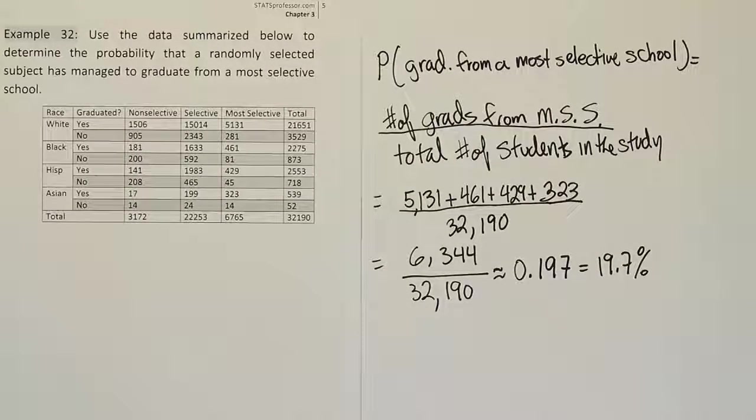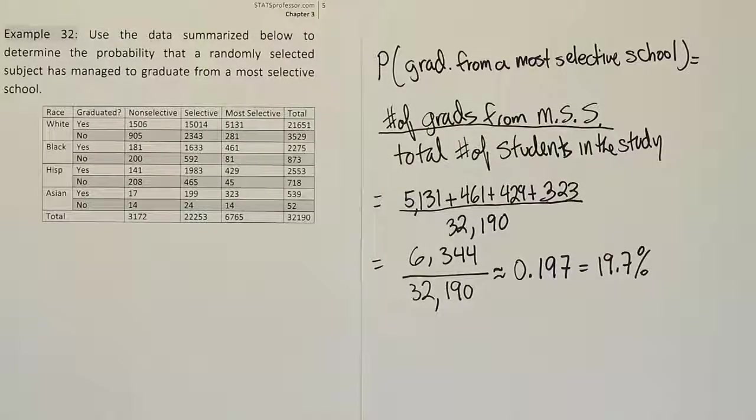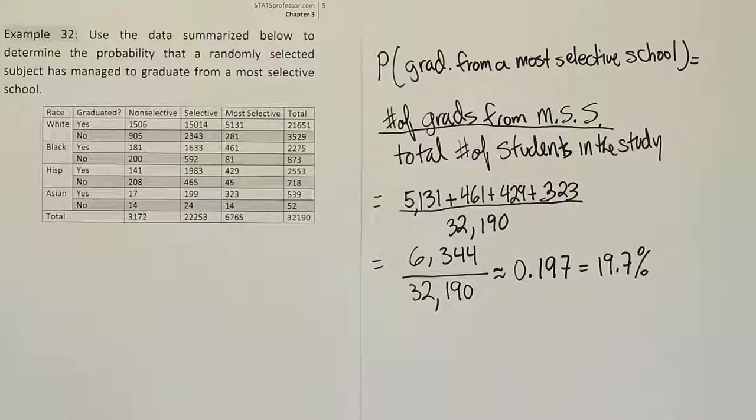So actually a non-selective school has the smallest percentage of graduates compared to attendees. In other words, they have lower graduation rates than the most selective schools. So it looks like if you put someone in a most selective school, it actually improves their chance of graduating on time or graduating at all. So that's actually very interesting.